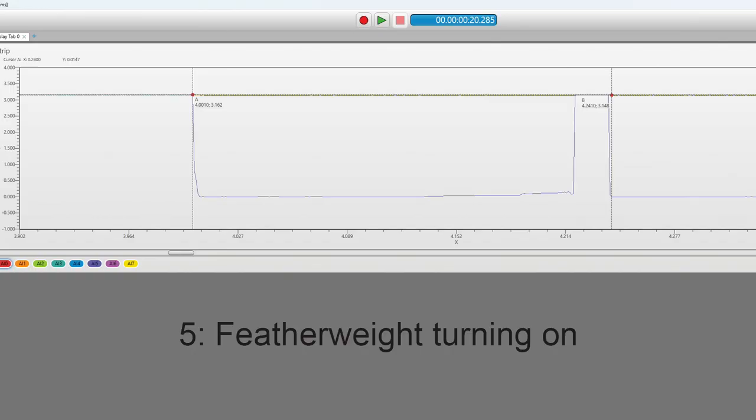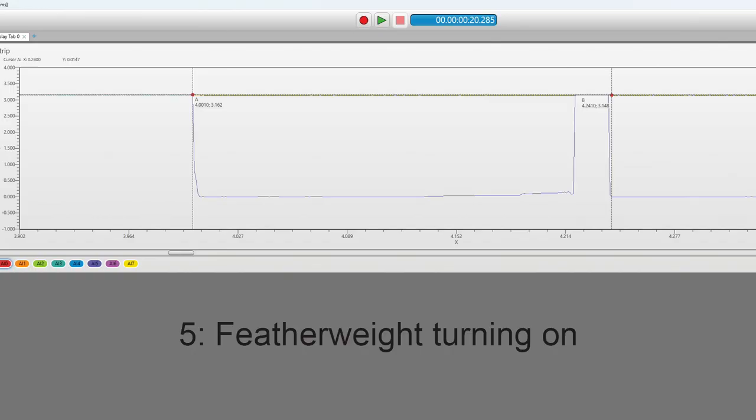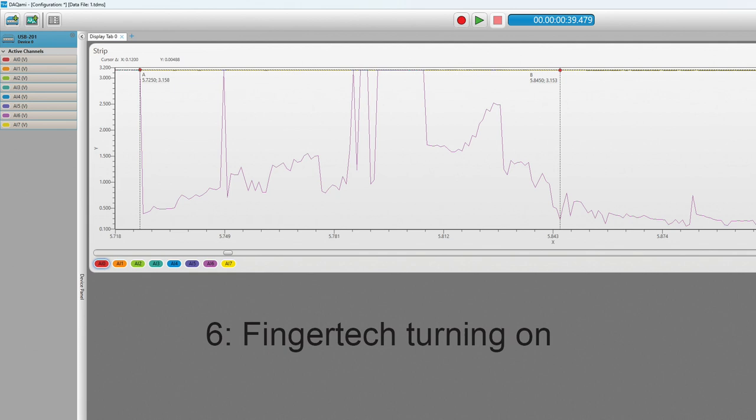Things get more interesting when we look at the screw switches. The Featherweight switch is a little slow. It looks worse than it is because I'm zoomed in. But what the hell is going on here with this FingerTech switch? This is really slow and really noisy. This was my first big surprise of the experiment. And even turning off, slow and very noisy.